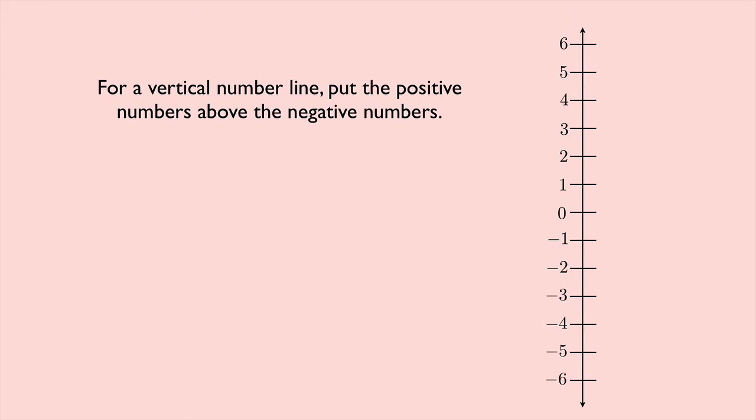Now the numbers that I've listed on my number line here are the integers. You're probably already familiar with the integers, but you might not know that the integers are represented by a funny-looking Z. Why Z? Well, it comes from the German word zahlen, which means numbers.